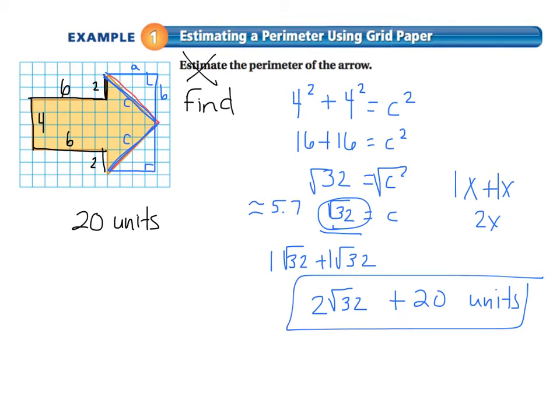So this is approximately 5.7. So, we could take 5.20 plus 5.7 plus 5.7. And I'm going to do this. So 5.7 plus 5.7 is 10 point, no, I'm sorry, 11.4. And so this would give me 31.4 units.